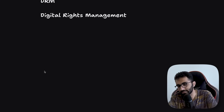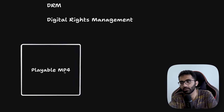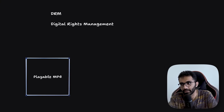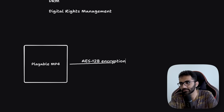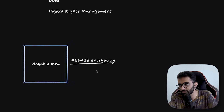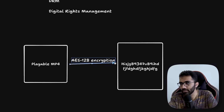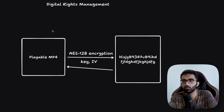Before understanding DRM, let's take a step back. Let's say this is a playable MP4 file — your typical file which you download on your computer and play with VLC media player. What you can do is encrypt this file with something called AES-128 encryption. AES is an Advanced Encryption Scheme — an algorithm that takes this file and encrypts it into garbage. To decrypt it, you need two keys: an encryption key and an initialization vector (IV). You plug them in and you get the playable MP4 back.